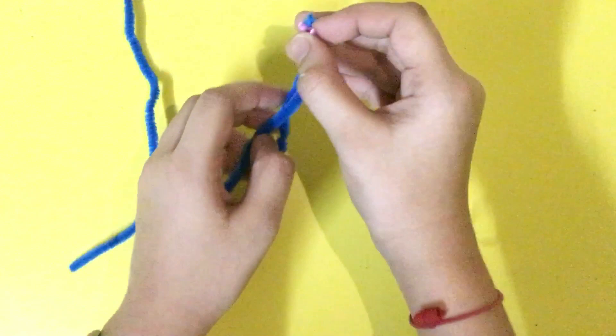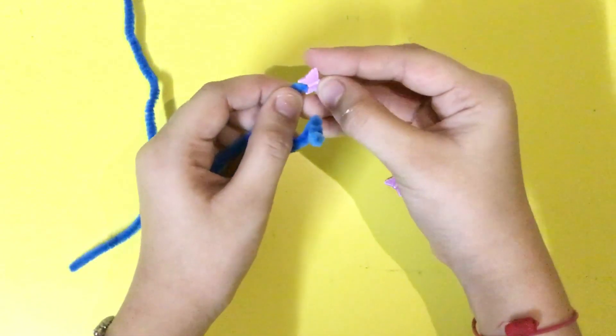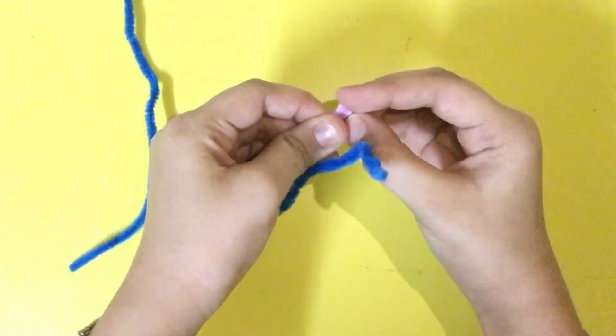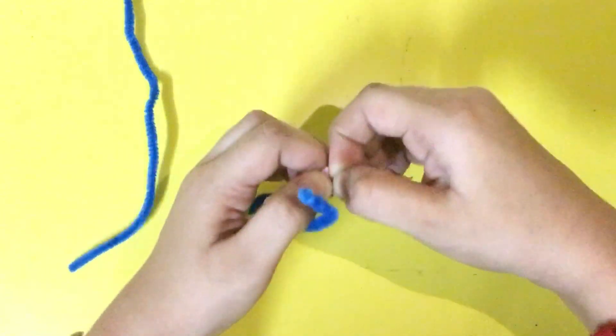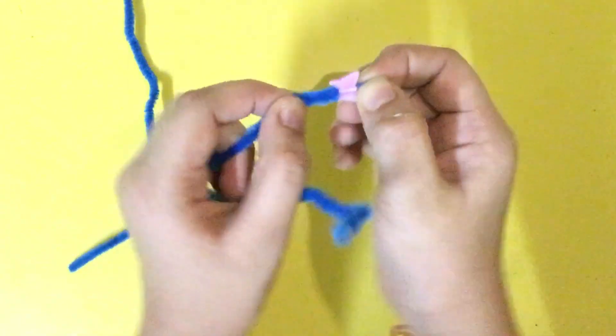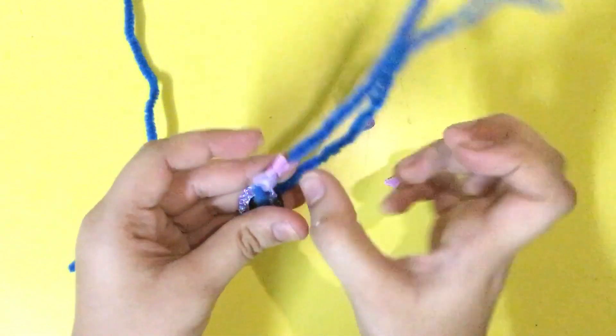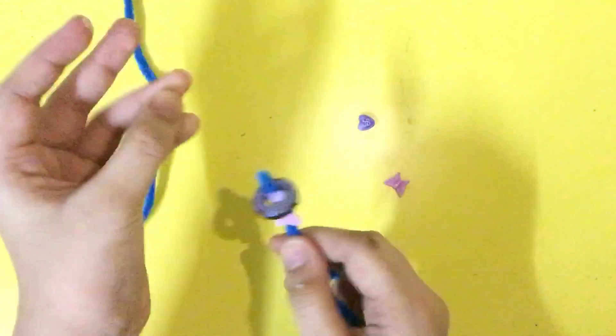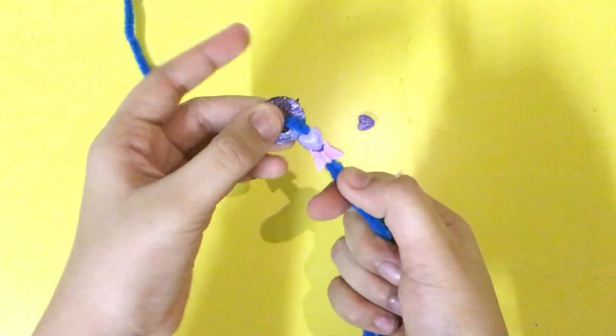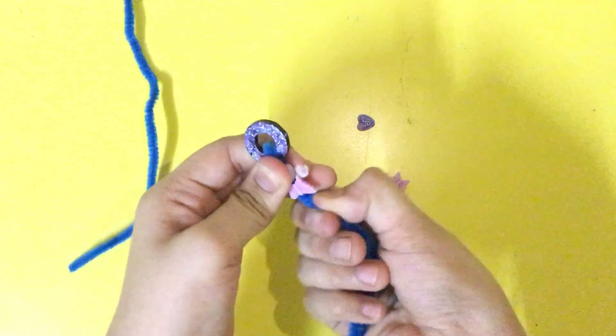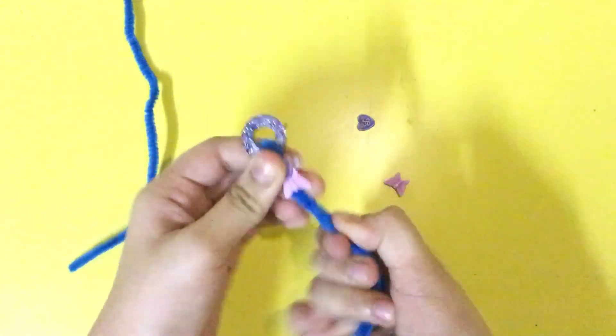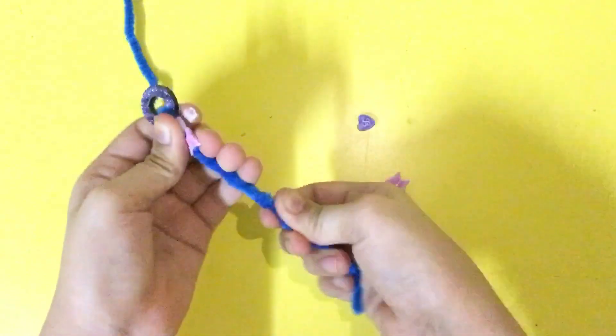And then the butterfly charm. You can use any charm you want. You can use as many as you want or you can use only one charm too. After adding the charms, you have to twist the pipe cleaner like so and really tight.